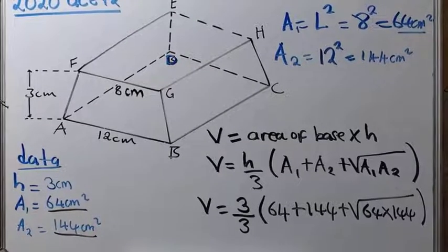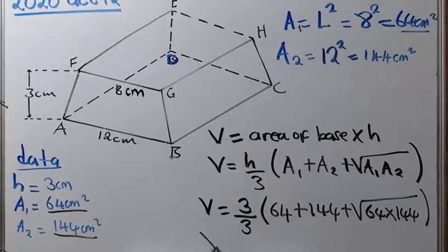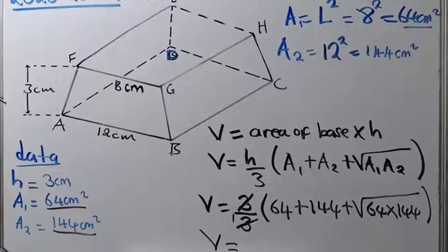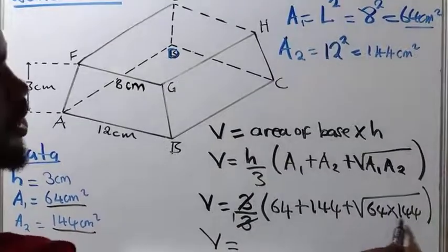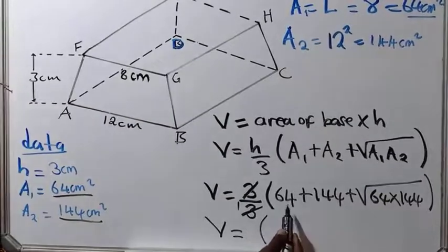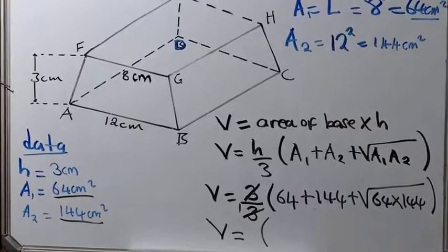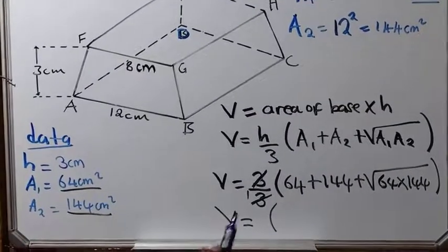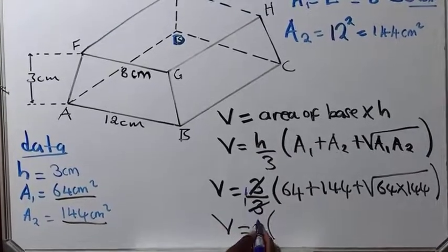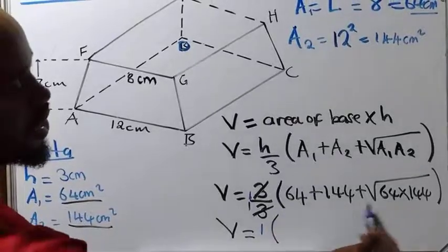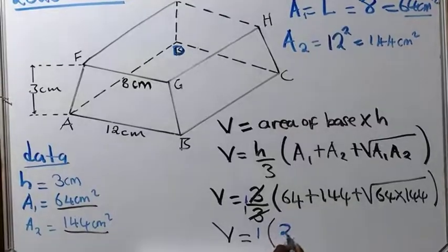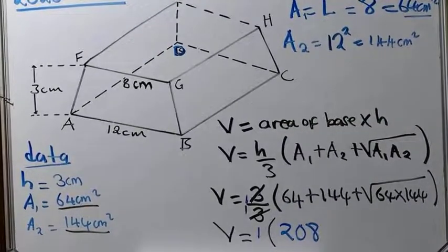This is paper 2. There is need for you to use the calculator. So volume is equal to, you divide this. 3 into 3, it's a 1. And here, since we have a 1, it's not going to make any change to everything that is inside the brackets. So what's next here? Just add 64 plus 144.